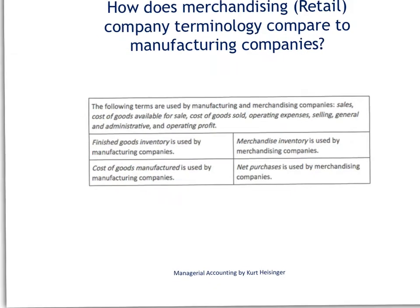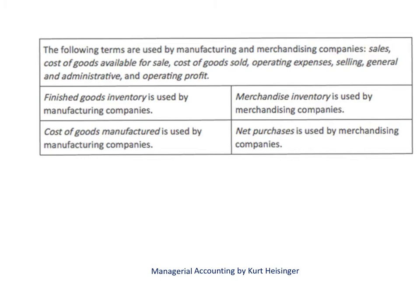Let me zoom in a little bit on these terms so you can see them more clearly. The following terms at the top are similar for both manufacturing companies and merchandising companies — and by the way, merchandising is really the same as a retail company. Both types of companies use the term sales to represent revenue derived from the sale of products. Both companies also use cost of goods available for sale, cost of goods sold, operating expenses, selling general and administrative expenses, and operating profit. These are all terms related to the income statement.